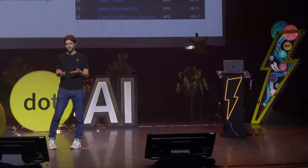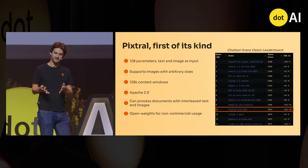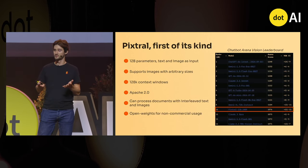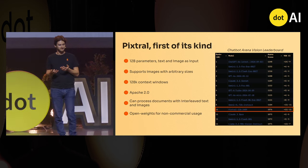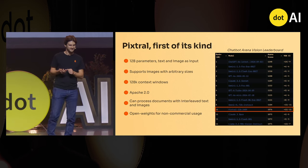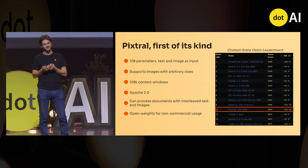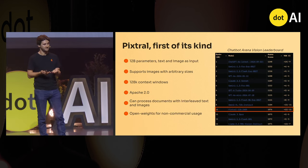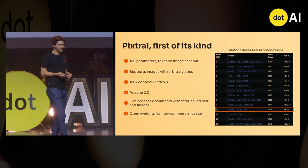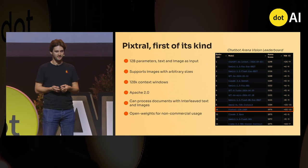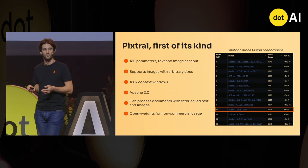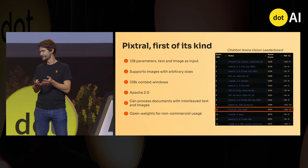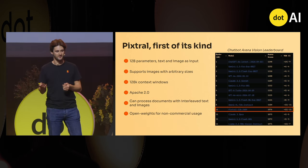You might be familiar with Pixtral as well — our very first multimodal model, with image and text as input — and it's already super small at 12 billion parameters. It's more than seven times smaller than LLaMA Vision, the 90B, and it's arguably better. For instance, on LMSYS — the chat arena — where people ask questions about images and chat with the model.